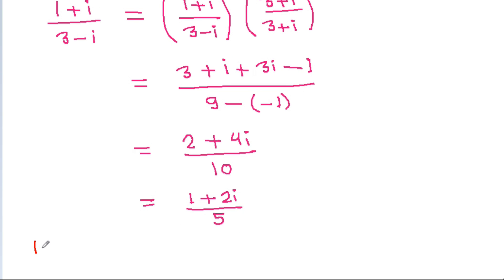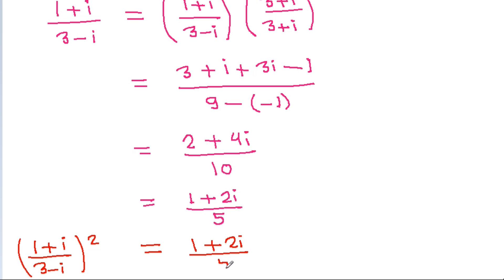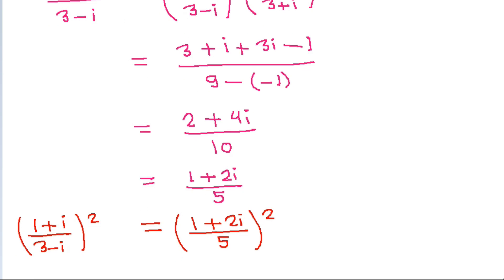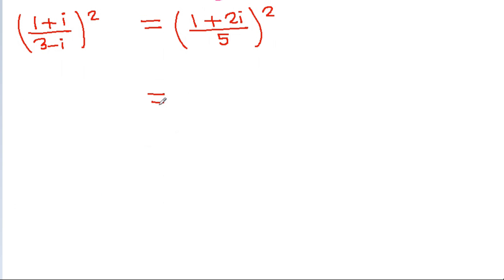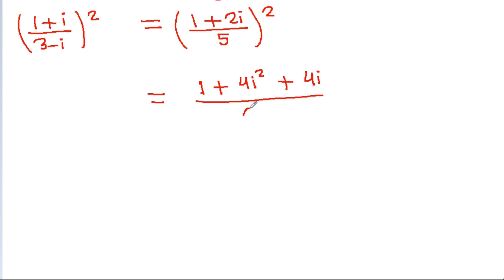And (1 + iota) / (3 - iota), all squared, will be equal to (1 + 2 iota) / 5, all squared. And it is equal to 1 squared is 1, plus 2 times 1 times 2 iota is 4 iota, plus 2 iota squared will be 4 iota squared, by 5 squared which is 25.